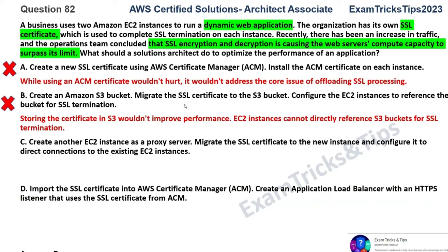Option C: create another EC2 instance as a proxy server, migrate the SSL certificate to the new instance, and configure it to direct connections to existing EC2 instances. We're basically adding one more EC2 instance solely dedicated to SSL termination encryption and decryption. This is not correct — it adds complexity and cost. An EC2 instance's job is not to do SSL termination. However, this is a nice stepping stone towards the actual solution.